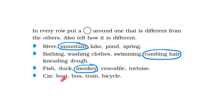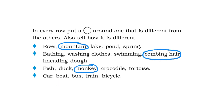Car, boat, bus, train, bicycle. I know that car, bus, train and bicycle travel on road. But a boat travels only on water. Therefore, boat is the odd one out here. I am circling the boat.